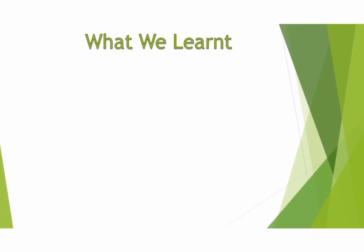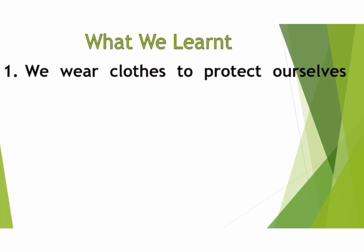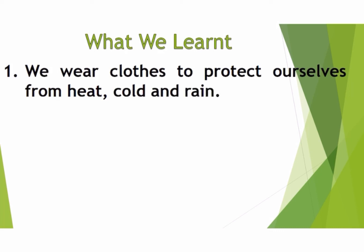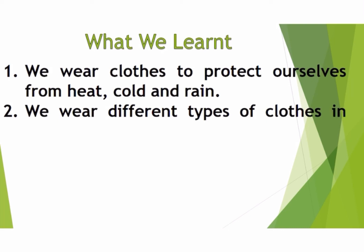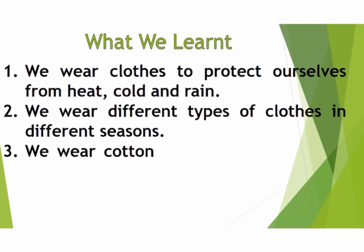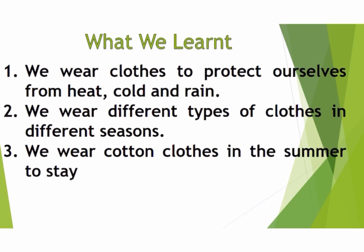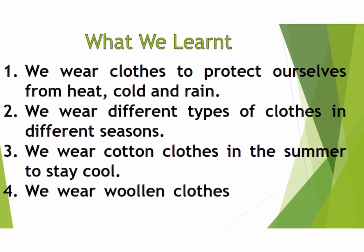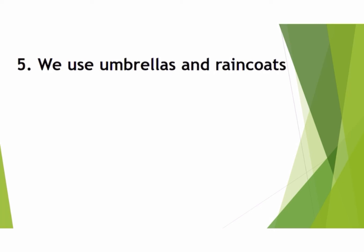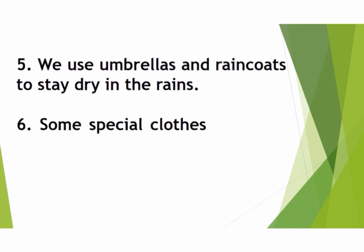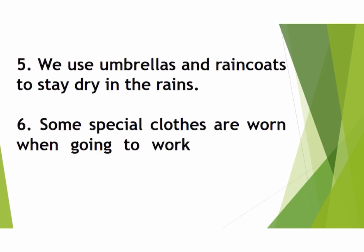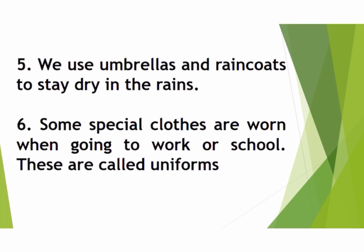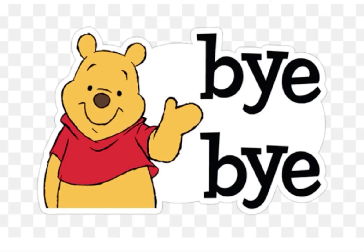Let's discuss what we have learned. First, we wear clothes to protect ourselves from heat, cold, and rain. Second, we wear different types of clothes in different seasons. Third, we wear cotton clothes in summer to stay cool. Fourth, we wear woolen clothes in winter to stay warm. Fifth, we use umbrellas and raincoats to stay dry in the rains. Sixth, some special clothes worn for work or school are called uniforms. That's all for today — please read this chapter twice at home. Have a good day, take care!